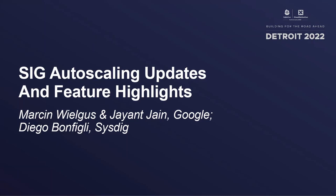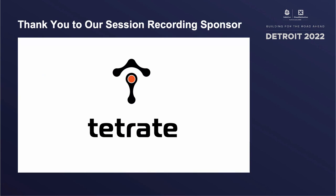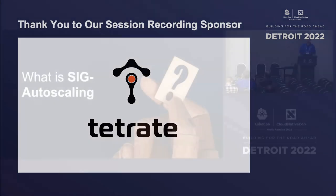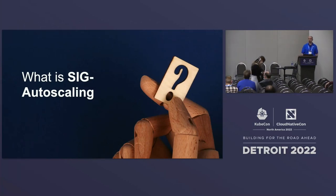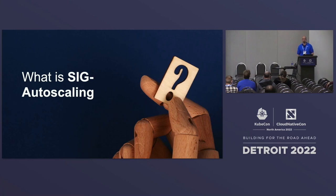Hello everyone, my name is Marcin Vygus and I'm representing SIG autoscaling group here. First of all, let me explain who we are. SIG autoscaling is a group of people within the Kubernetes community focusing on reducing the cost of running your clusters.